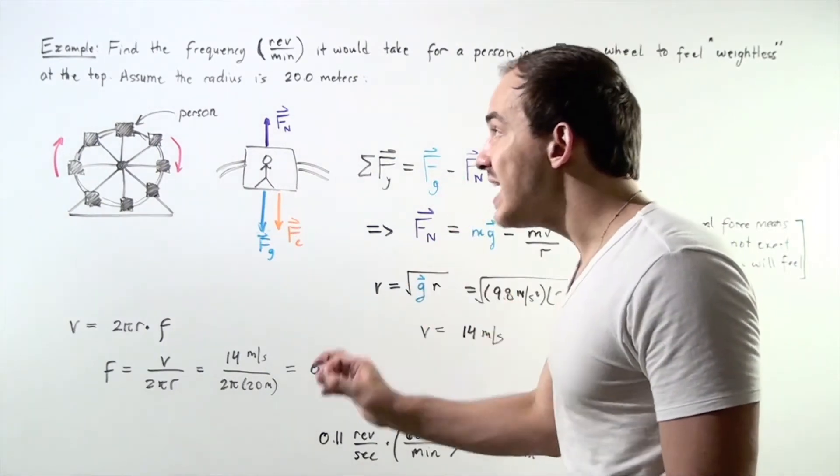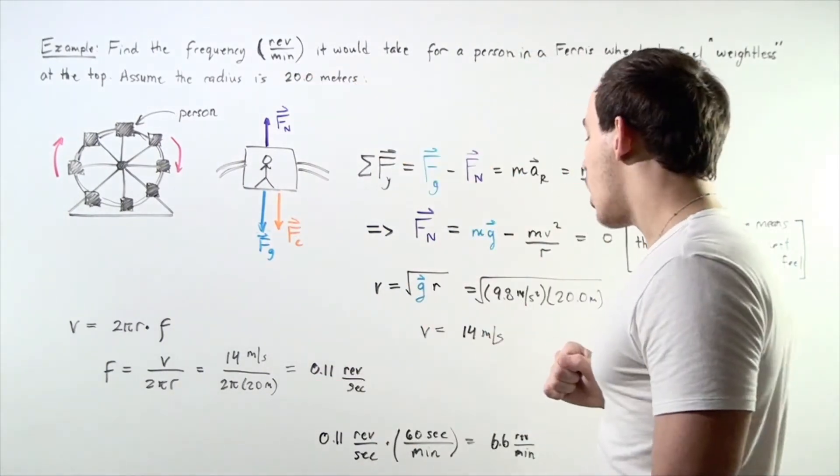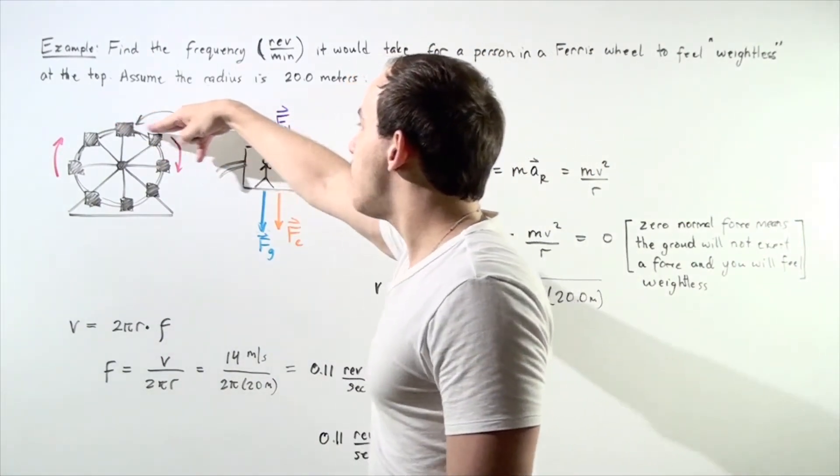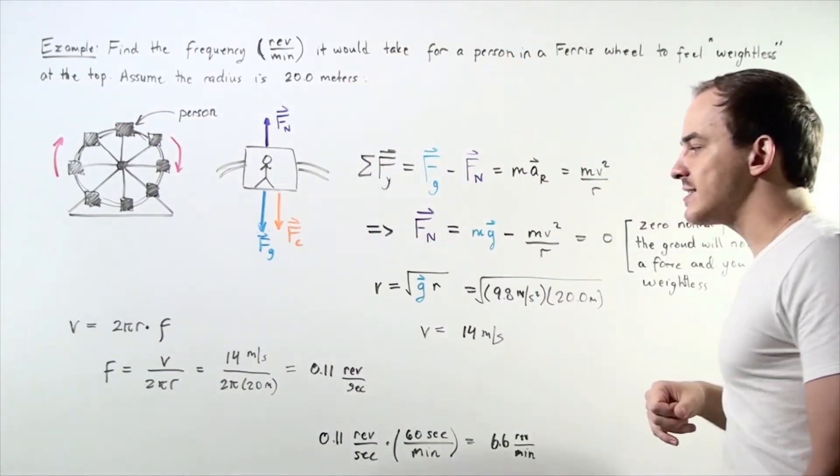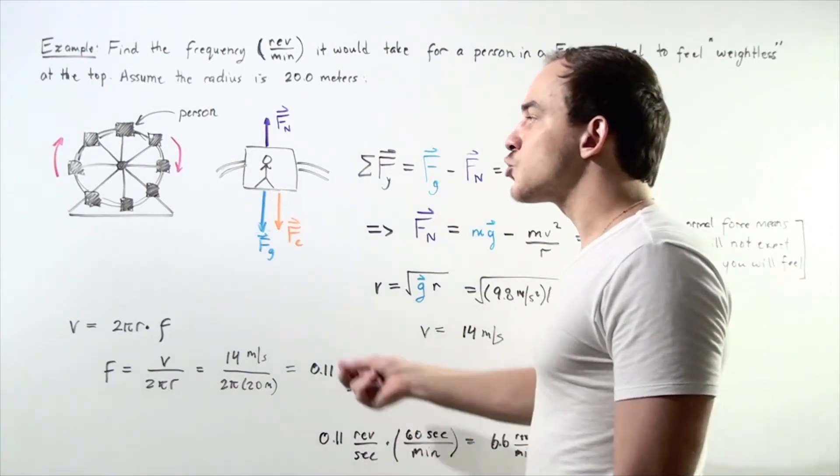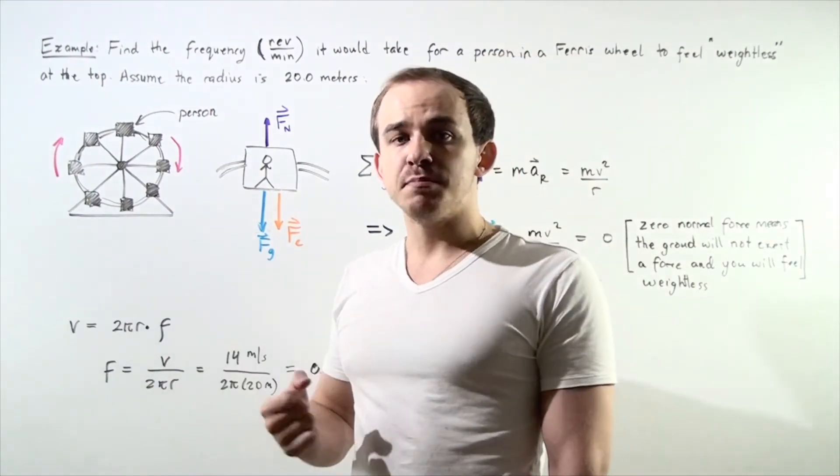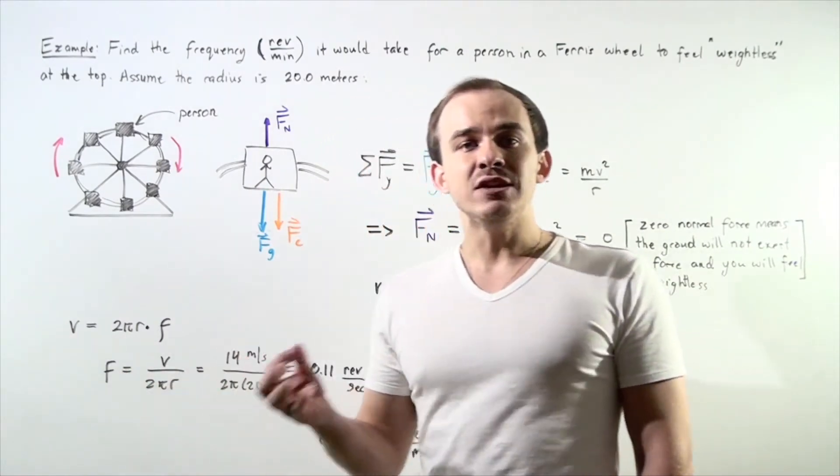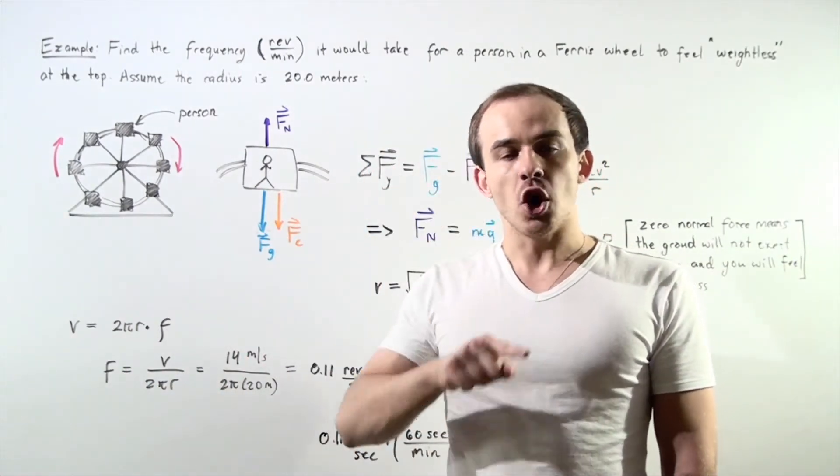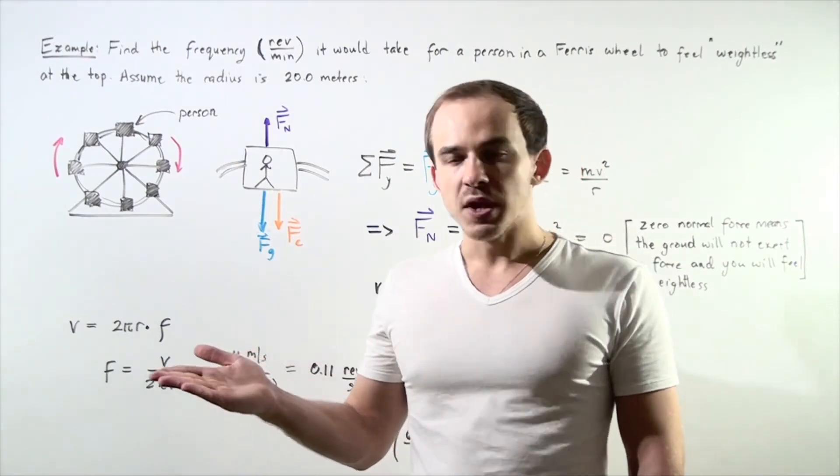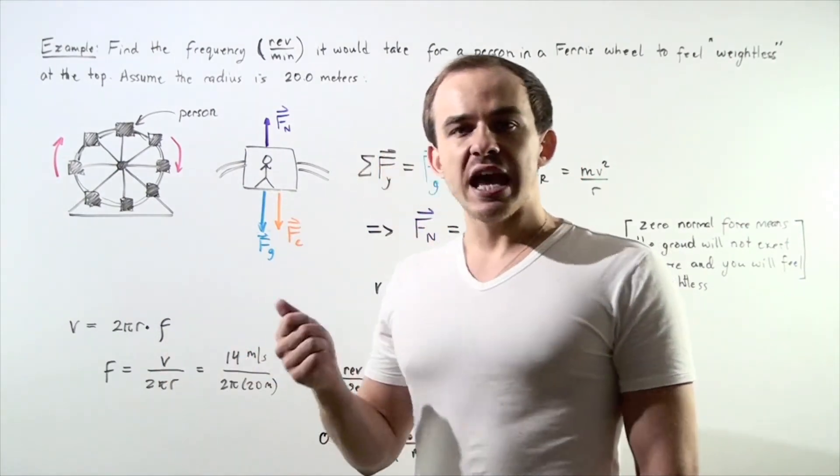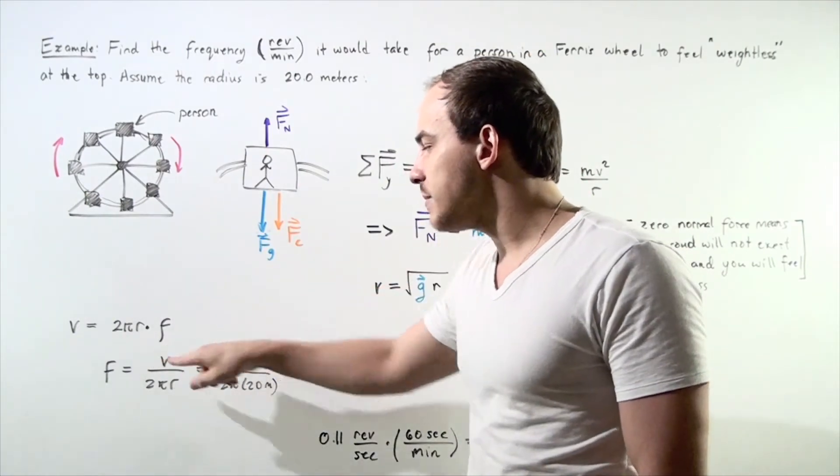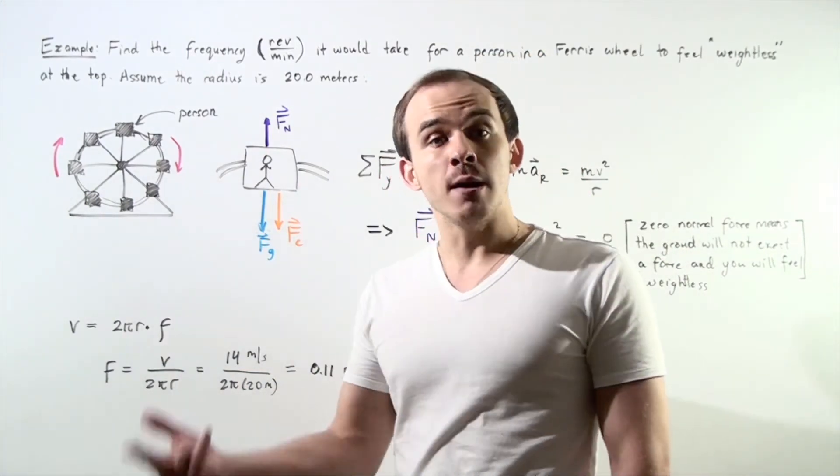Our person has a velocity at the top of our arc of 14 meters per second that points in the positive direction along the x-axis. Now let's recall what the relationship is between velocity and frequency. Velocity is equal to the circumference of our circle multiplied by the frequency. So we can solve for frequency and we get the frequency is equal to velocity divided by 2πr, our circumference.